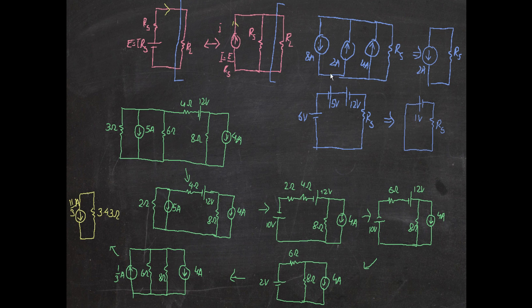Another thing to know about source conversion is that when there are multiple sources of the same type — current or voltage — and they are aligned with some pointing downwards and others upwards, if you want to combine them into one source, whichever is bigger dominates. When sources point in the same direction, you add them: here, four plus two is six since those two point the same way.